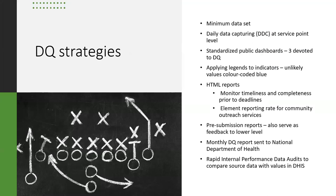Now that we are on DHIS-2, we have certain data quality strategies we follow in the country. We've gone for a minimum data set, because this impacts so heavily on data quality — the more data you collect, the more likely you are to have data quality issues. The minimum data set is revised every two years, and it goes through a great amount of consultation across all levels from national to province to districts to sub-districts. Programs are given an opportunity to input into it, and anything that really wasn't used is kicked out. Once they've settled on the minimum data set for the next two-year period, it is signed off by the Minister of Health.